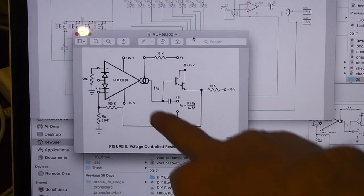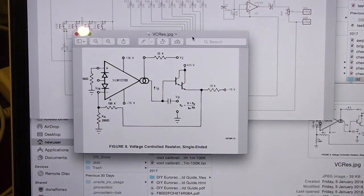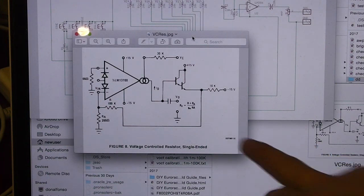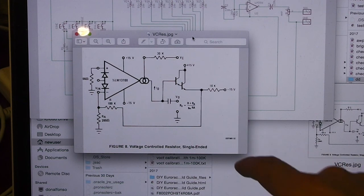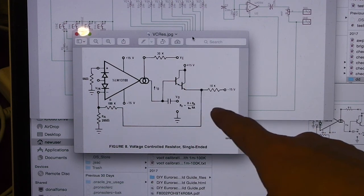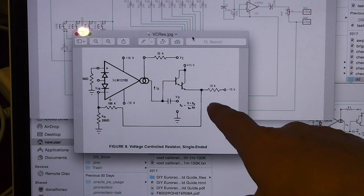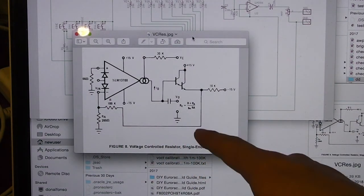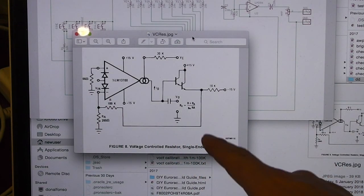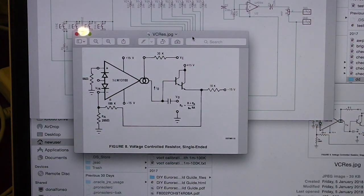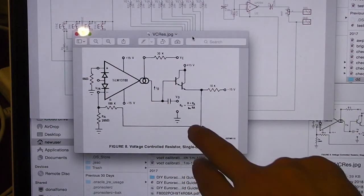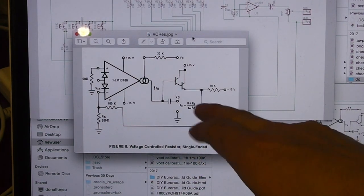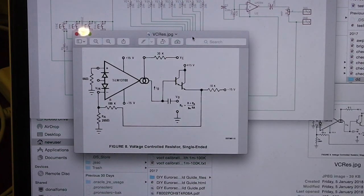This here is the LM13700 in an application as a voltage controlled resistor. This is also a single ended current source, just like the one that I made with the PNP transistor. Except again, it's an IC. The wiring around it is a lot more complex than the one that I just did. The circuit supporting the IC is also a lot more complex than the PNP transistor circuit that I just experimented with.